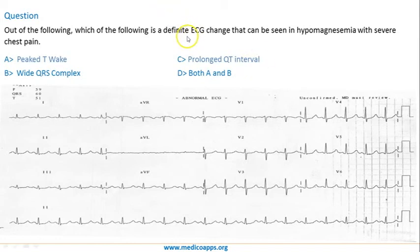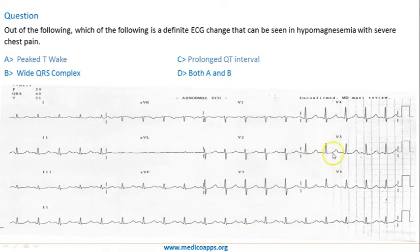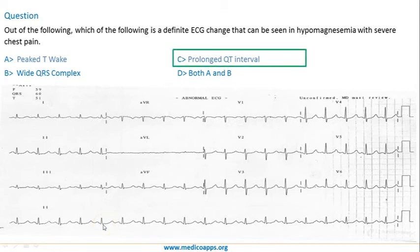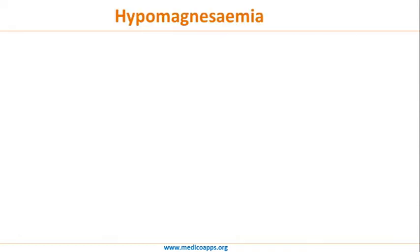Out of the following options, which is a definite ECG change seen in hypomagnesemia with severe chest pain? In the ECG shown, the QRS complex and P wave look normal, but the T wave is very far from the QRS complex — the QT interval is clearly increased, best appreciated in the rhythm strip where P, QRS, then T are widely separated. QT prolongation is characteristic of hypomagnesemia.